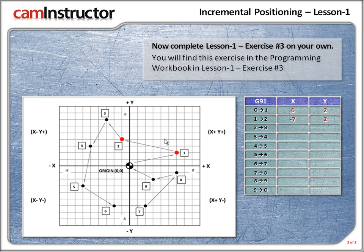From 2 to 3 — let's figure out the x first. We're moving to the left, in the x negative direction. How many squares? 2. So from 2 to 3, x minus 2. Now the y — we're moving upwards. How many squares? 1, 2, 3. We're moving in the positive y direction, 3 squares. So from 2 to 3, x is minus 2 and y plus 3.